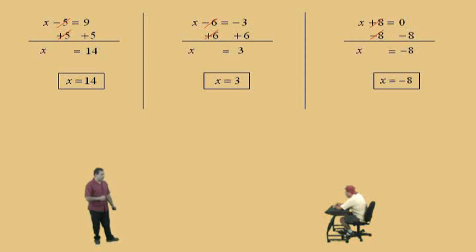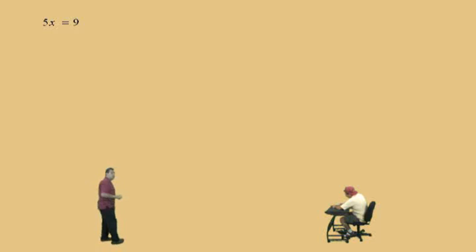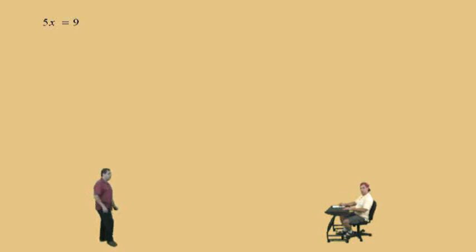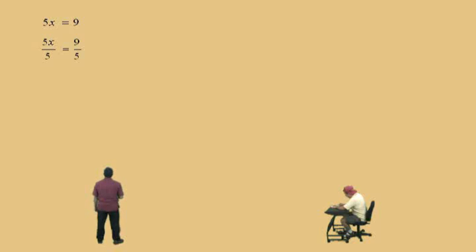Those were some good warm-up problems, so let's get some tougher ones. Here we have 5x equals 9. Remember, 5x means 5 times x. Our goal is to get 1x by itself. Since we have 5 times x and we want 1x, what do we need to do to both sides, Charlie? Divide by 5.